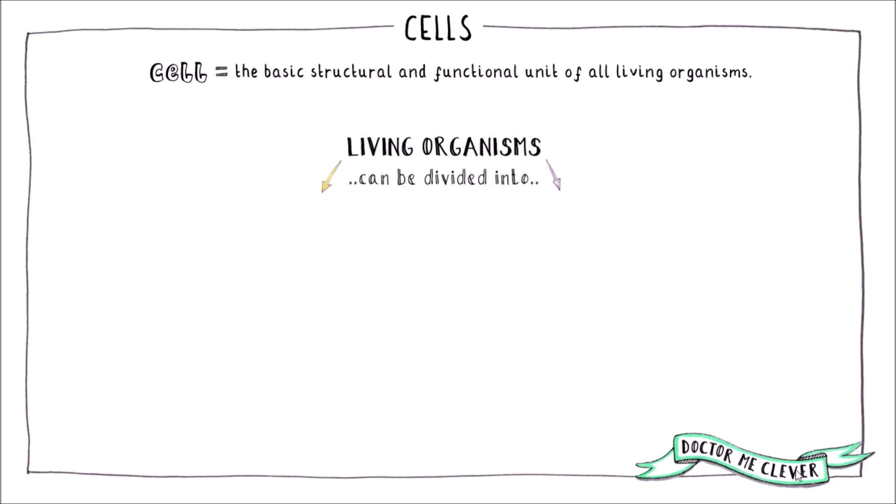Living organisms can be divided into one of two groups depending on the type of cells that they are made up of. The first group of organisms are called eukaryotes. The second group of organisms are called prokaryotes.